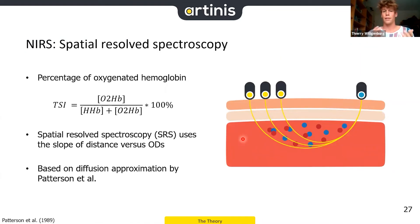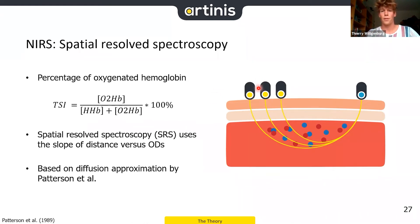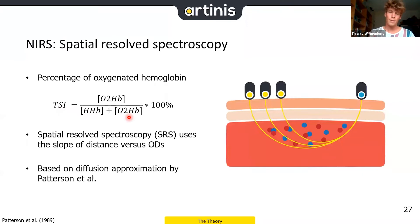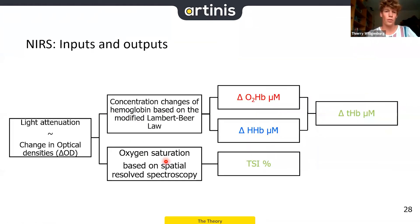Beside relative changes in oxy and deoxy values, we can also quantify an absolute value: the TSI, the tissue saturation index. It's based on spatial resolved spectroscopy, using the slope of distance versus optical density, based on the diffusion approximation by Paterson et al. TSI = oxyhemoglobin / (oxyhemoglobin + deoxyhemoglobin) × 100%, giving a percentage of oxygen in the tissue — an absolute value.